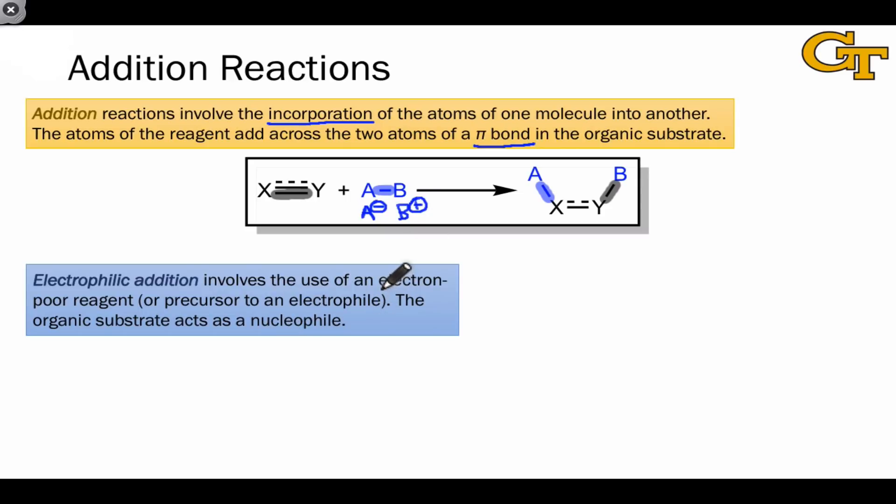Electrophilic addition involves the use of an electron-poor reagent that is an electrophile itself or is a precursor to an electrophile. The organic substrate thus acts as a nucleophile. And here's an example of electrophilic addition.